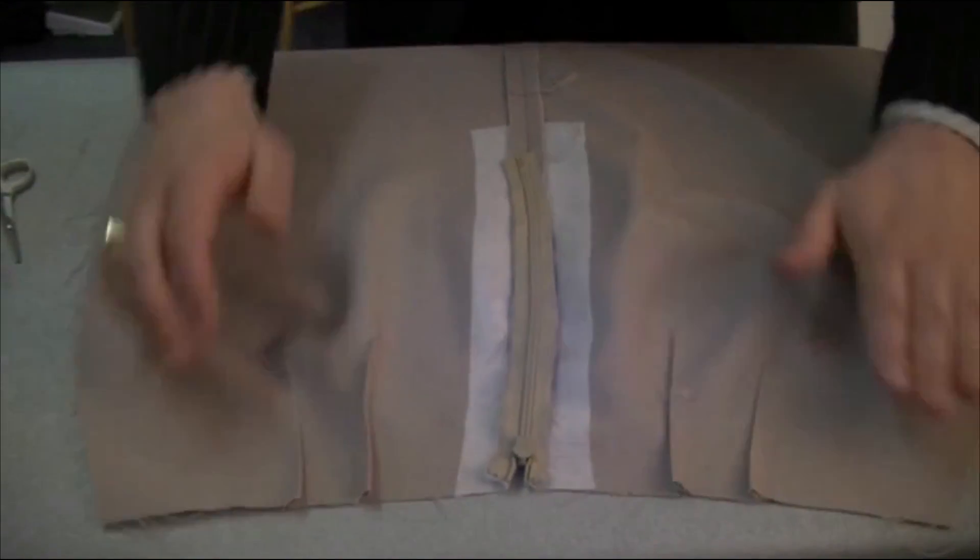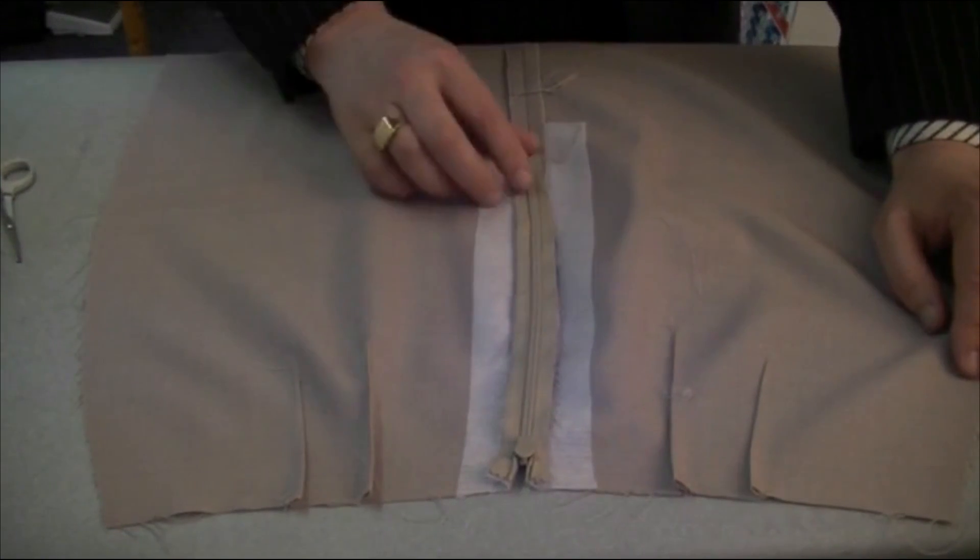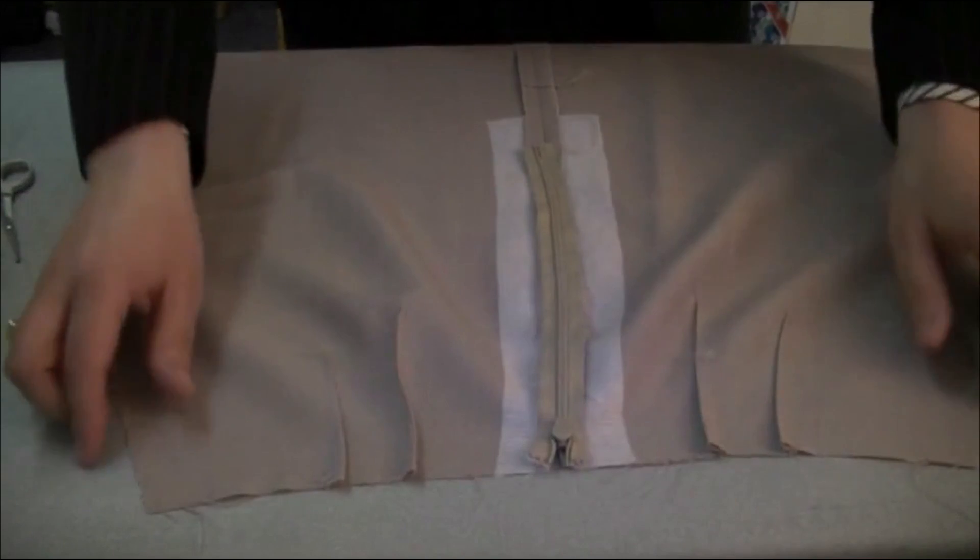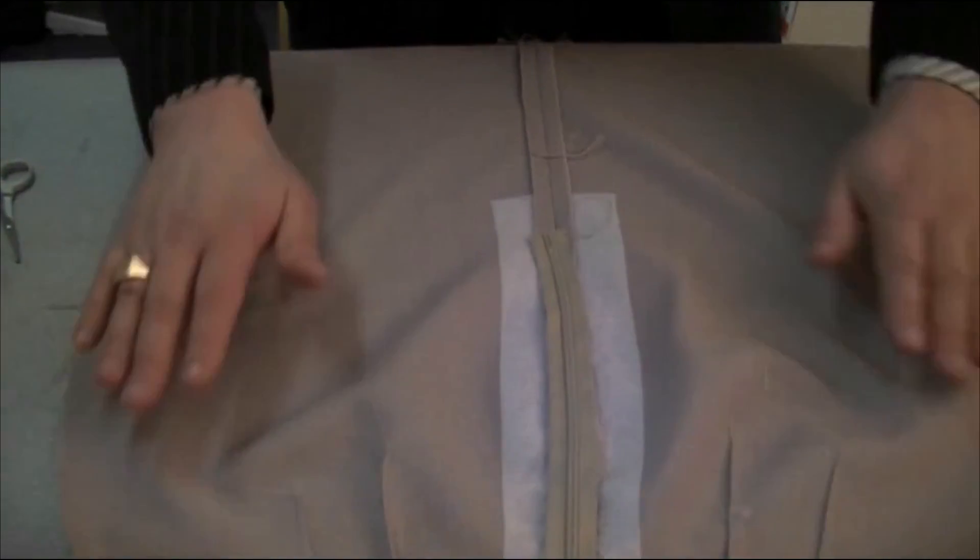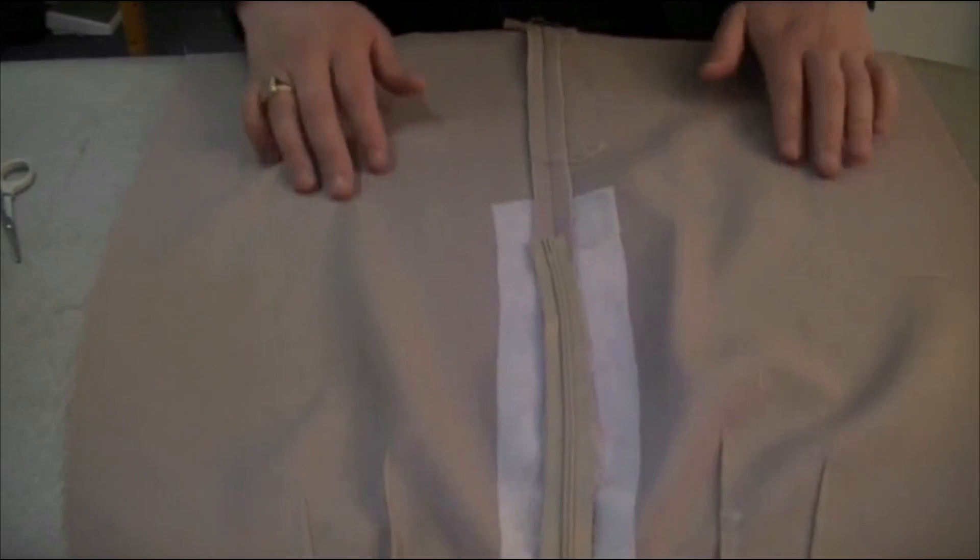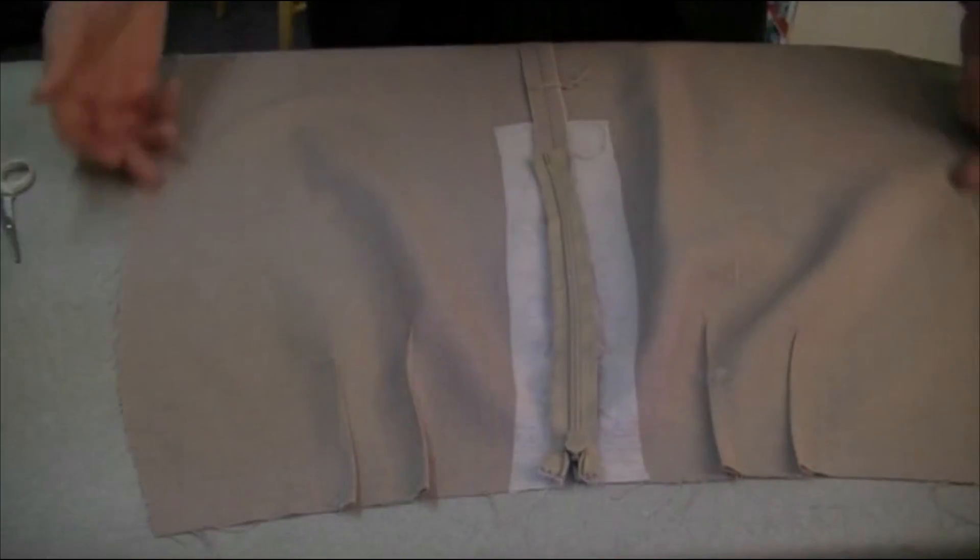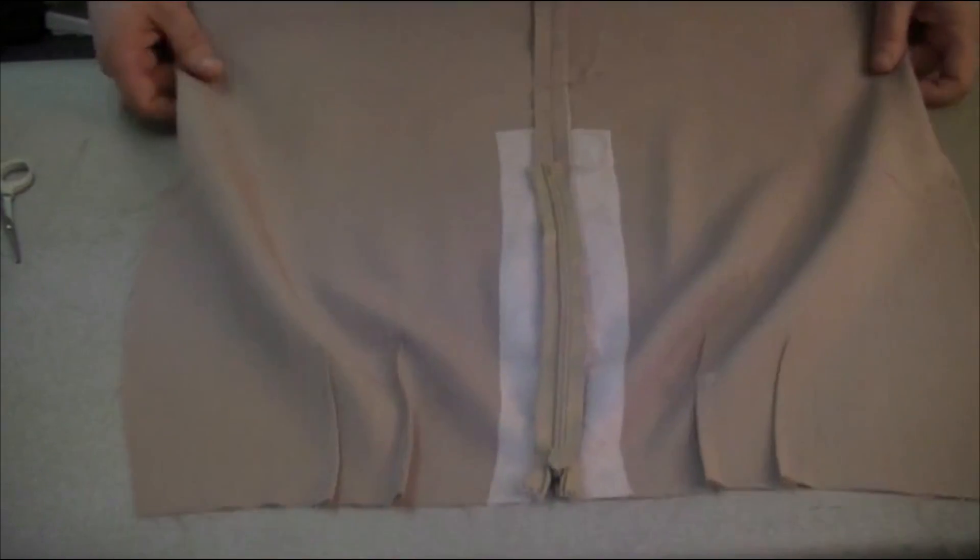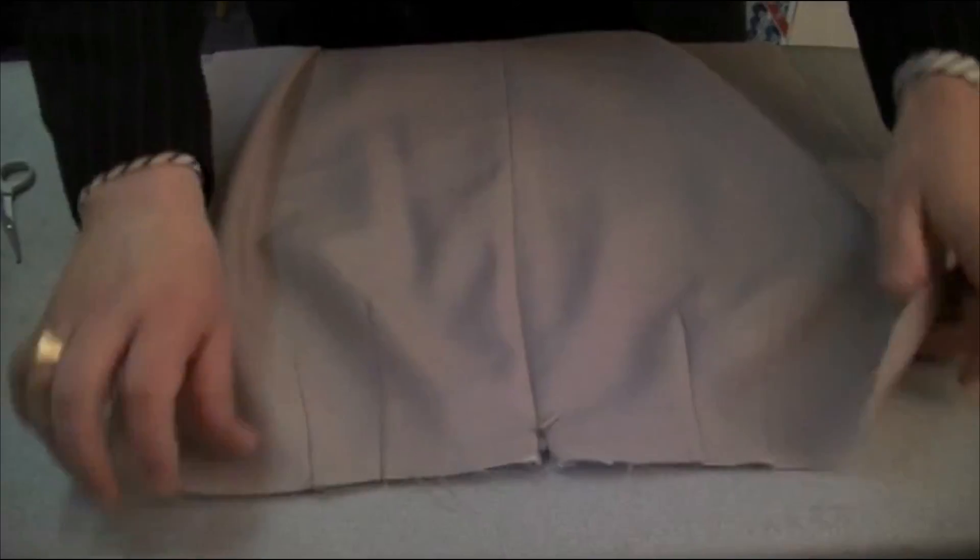So that's basically it. When you've done that, you have attached the concealed zipper. Again, if you're going to be not using lining, you should have overlocked there and here. And now, we are ready to attach the back panel to the front panel.